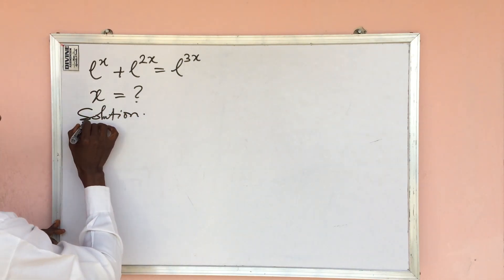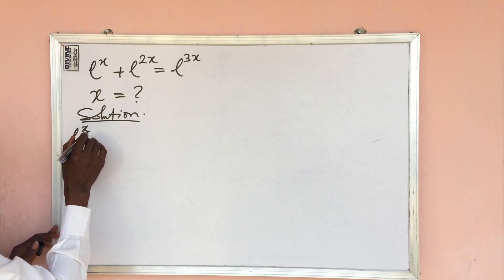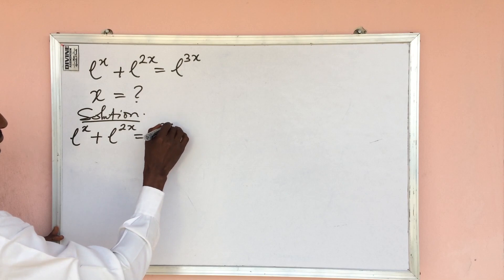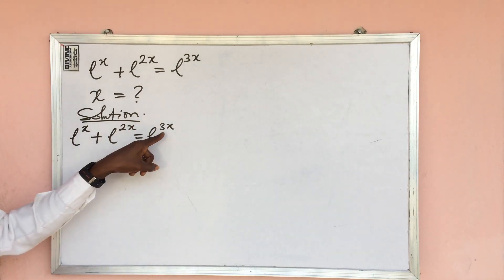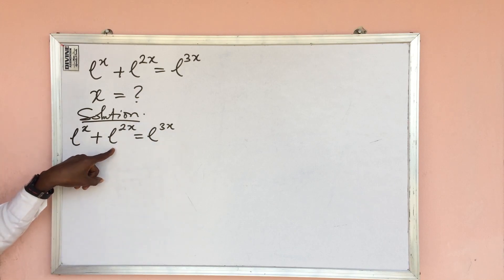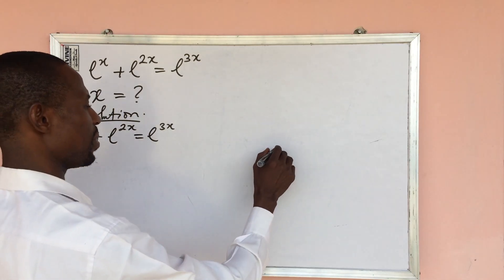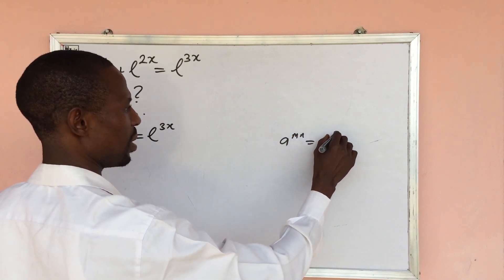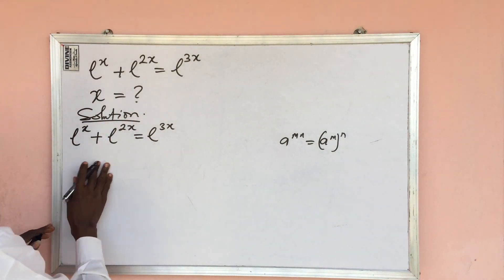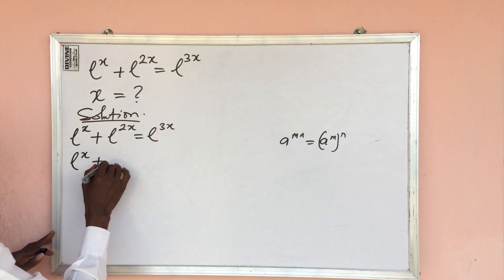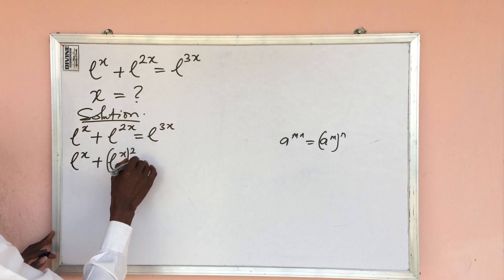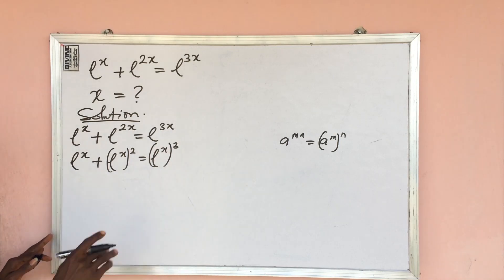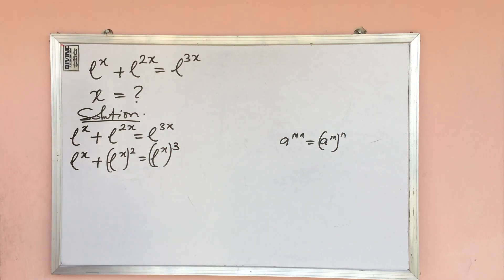Let's write down our solution. We have e to the power of x plus e to the power of 2x equal to e to the power of 3x. Now if you look carefully, we can bring out e to the power of x from each term according to the law of indices, which states that a to the power of mn equals a to the power of m times n. So we can write this as e^x plus e^x times e^2 equal to e^x times e^3.